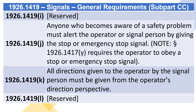1926.1419(J): Anyone who becomes aware of a safety problem must alert the operator or signal person by giving the stop or emergency stop signal. Note: Section 1926.1417(Y) requires the operator to obey a stop or emergency stop signal. 1926.1419(K): All directions given to the operator by the signal person must be given from the operator's direction perspective.